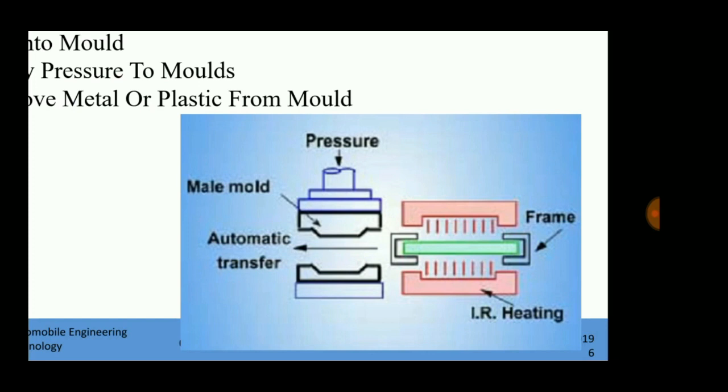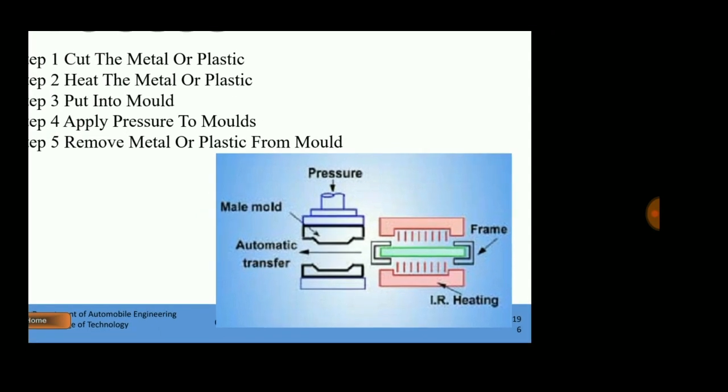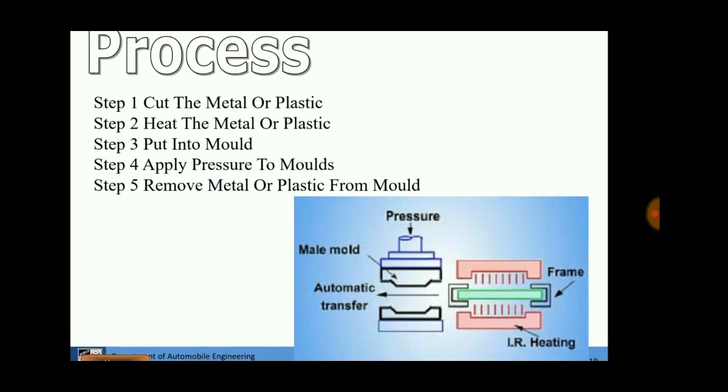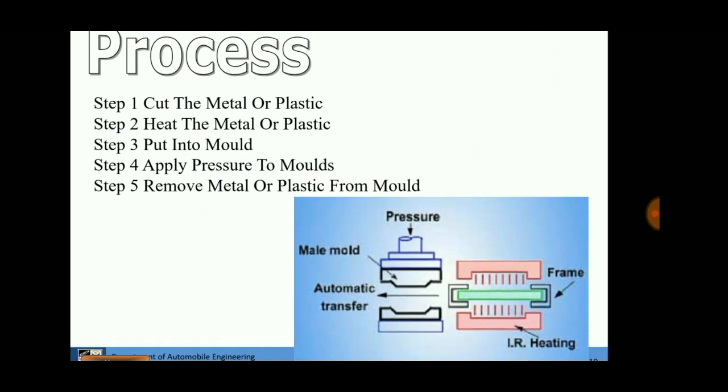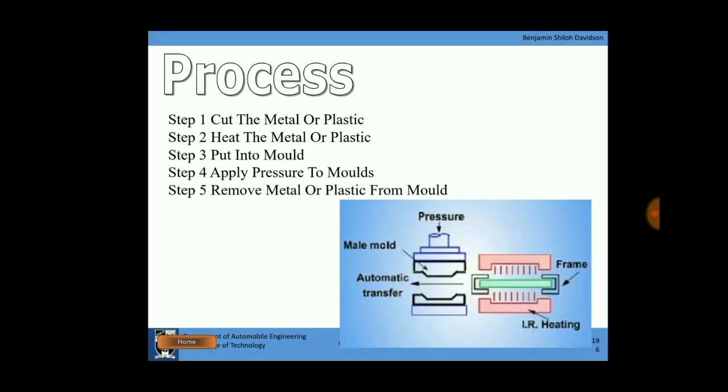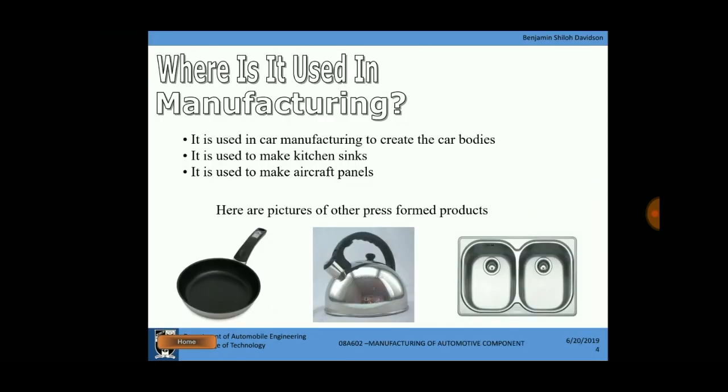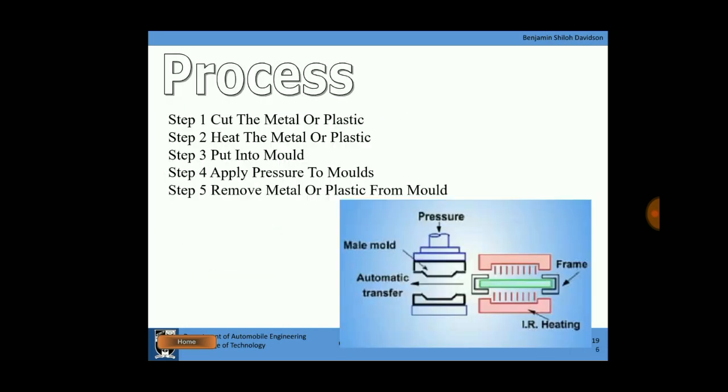The pressure, either mechanical or hydraulic, deforms the sheet metal and the sheet metal takes up the shape of the mold cavity. Different shapes can be produced like this - a pan, a sink, or aircraft panels.